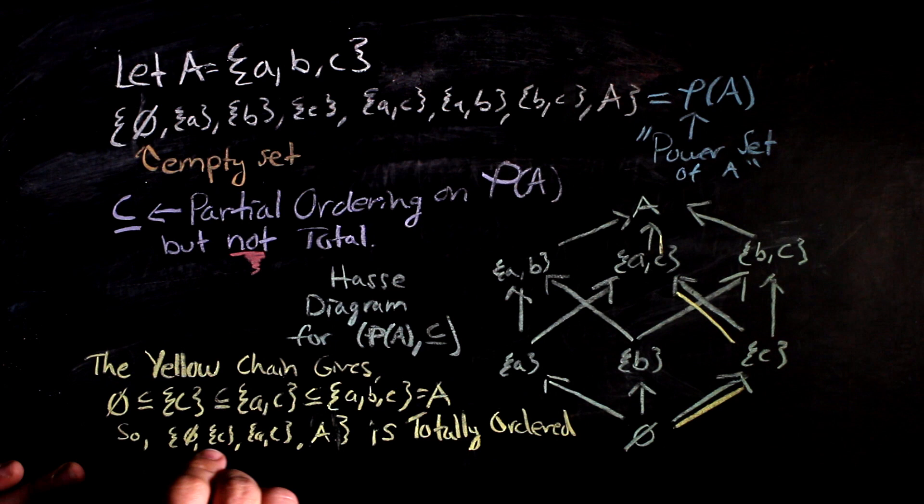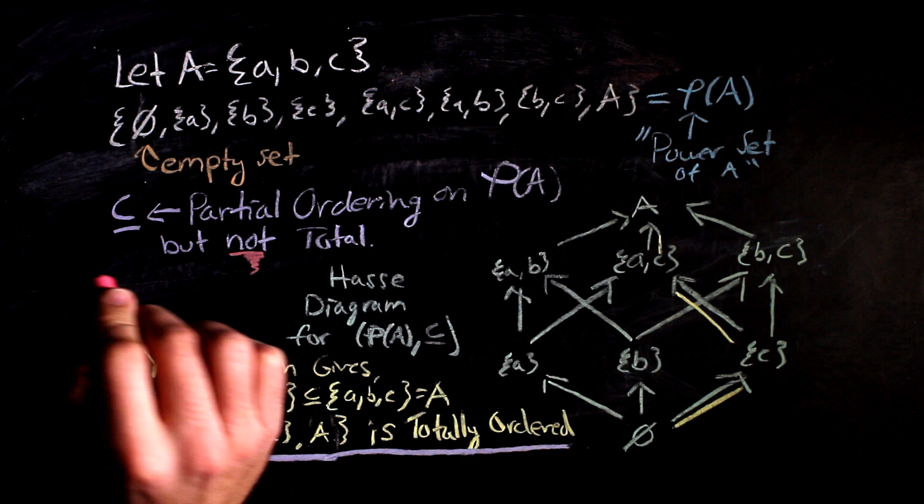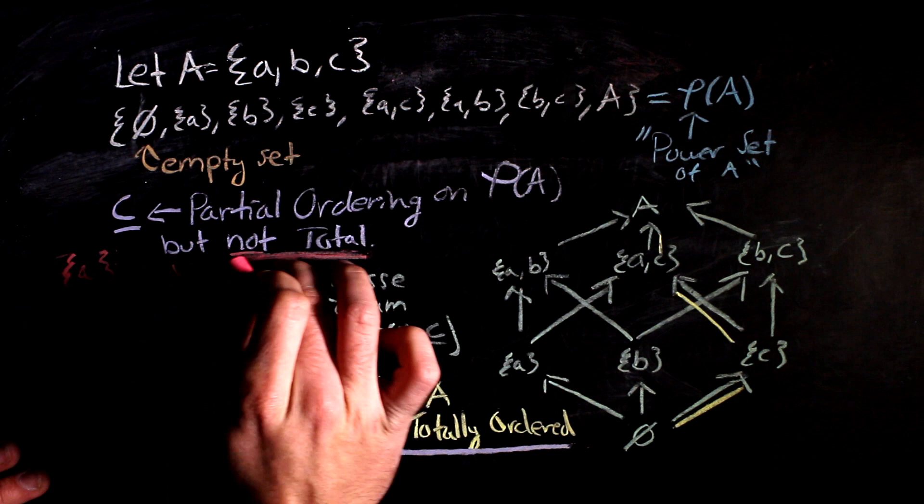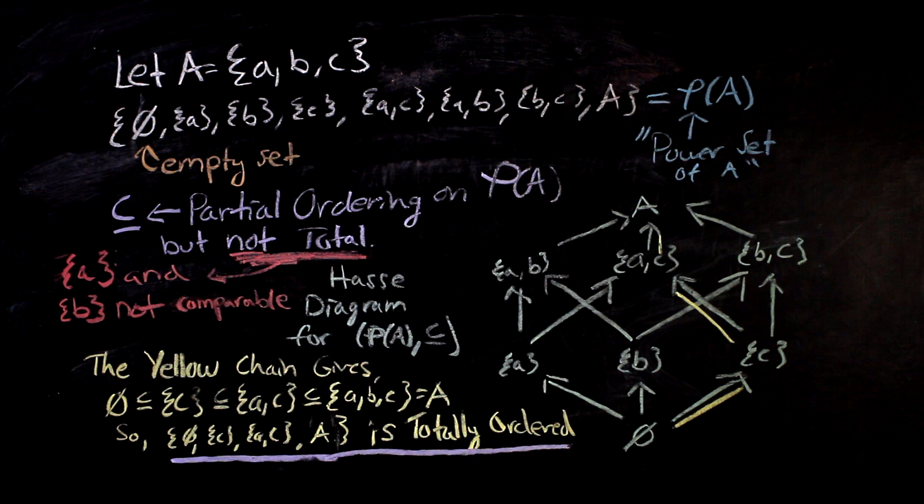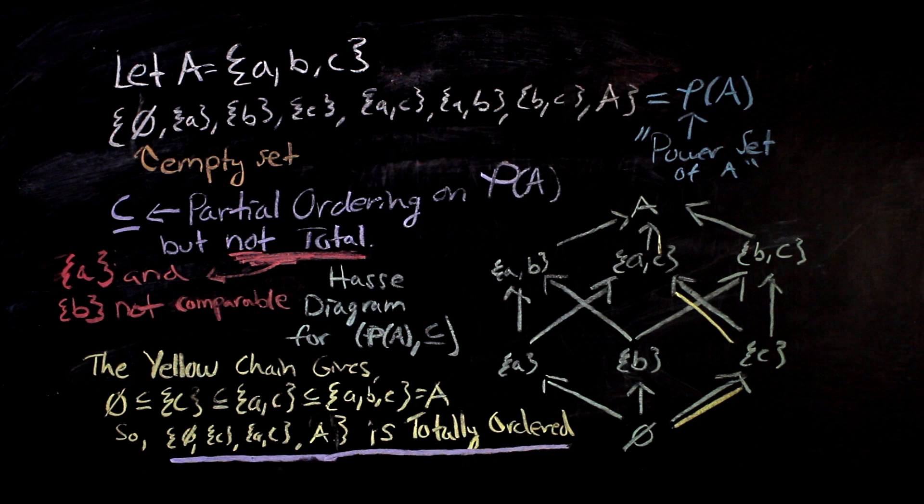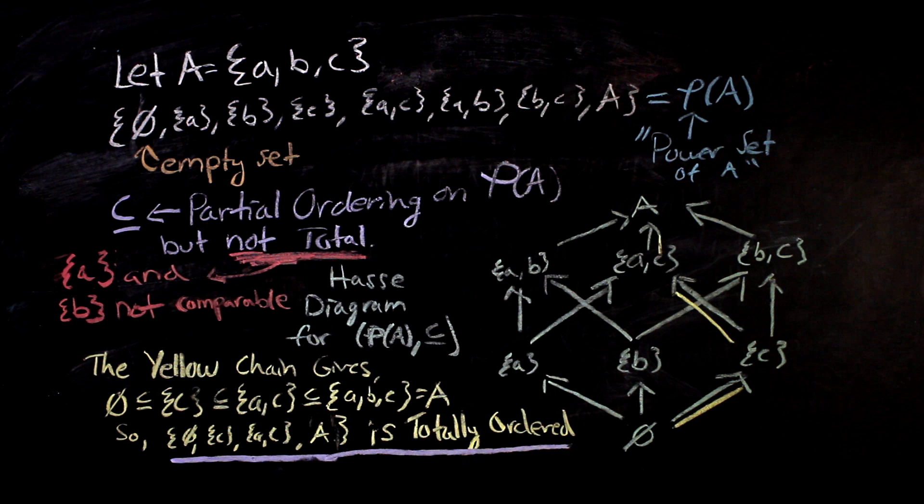Since there is more than one chain in the Hasse diagram for the power set of A, it follows that not everything is comparable. For instance, the set of A and the set of B are not comparable, as there is no chain that contains both of them. So the relation is not a total ordering. It is a short exercise to see that the transitive, antisymmetric, and reflexive properties are all presented by the Hasse diagram as well. If you're not convinced, now would be a good time to stop and think about it before continuing on.